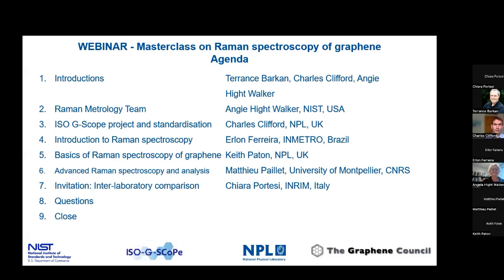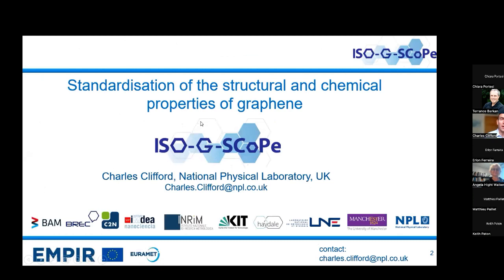Now I'd like to introduce my colleague Charles Clifford, who you heard from in the beginning. He's at NPL and he's going to talk about his project, ISO G Scope, which is very European-focused and also broadly focused on graphene. Thank you, Angie. I'm going to talk about the ISO G Scope project, which is co-organising this event, and also discuss international standardisation in the graphene area in general.